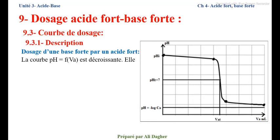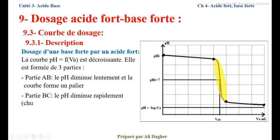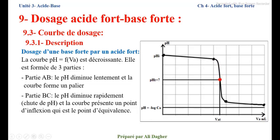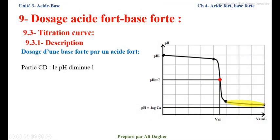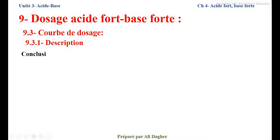Dans le cas où la base forte est placée dans le bécher, la courbe pH = f(VA) est décroissante. Elle est formée de trois parties. Partie A-B : le pH diminue lentement et la courbe forme un palier. Partie B-C : le pH diminue rapidement — chute de pH — et la courbe présente un point d'inflexion qui est le point d'équivalence. Partie C-D : le pH diminue lentement de nouveau, la courbe forme un autre palier et tend vers une asymptote horizontale de pH = −log(CA), qui est le pH de la solution dans la burette.